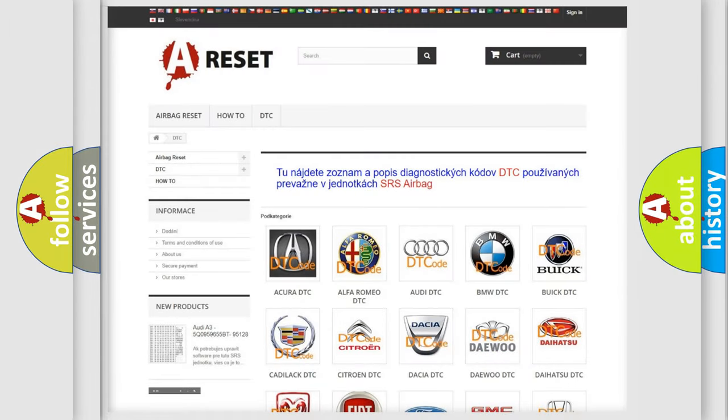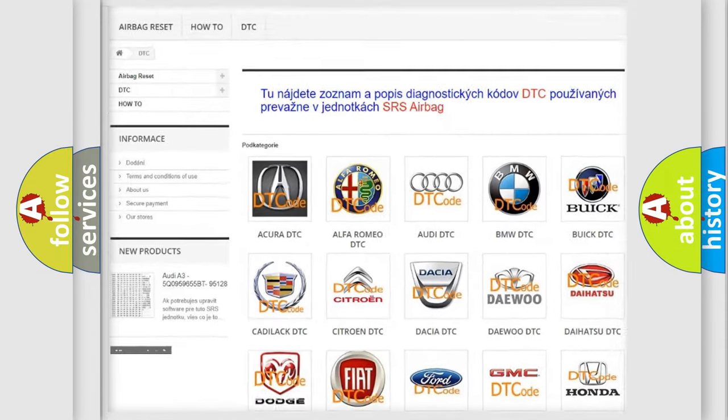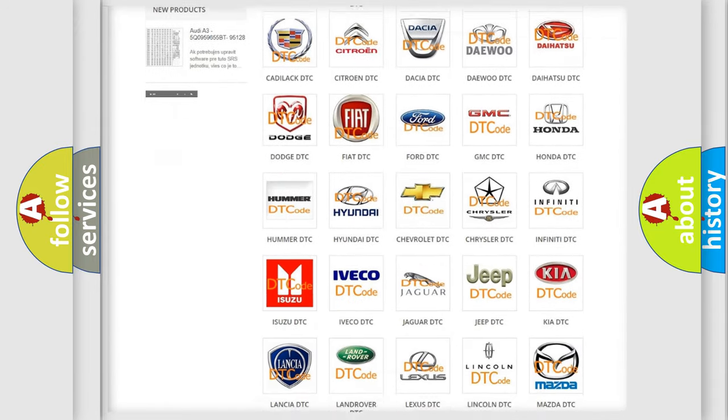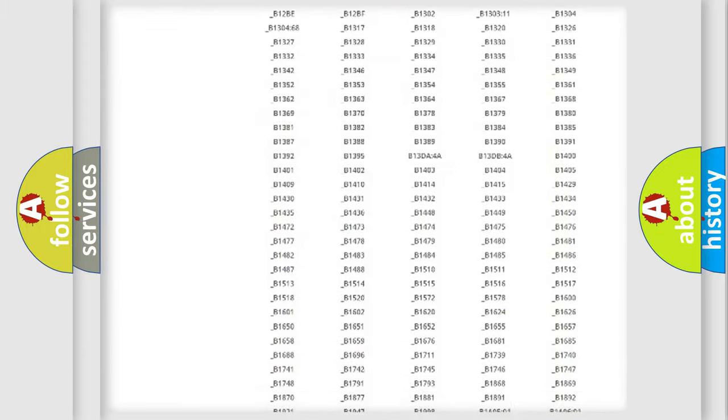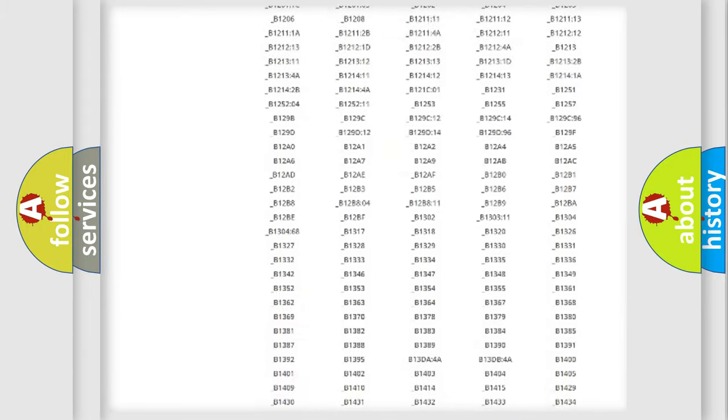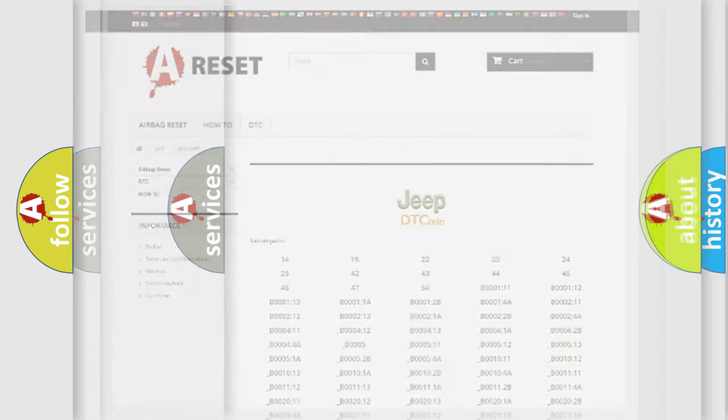Our website airbagreset.sk produces useful videos for you. You do not have to go through the OBD2 protocol anymore to know how to troubleshoot any car breakdown. You will find all the diagnostic codes that can be diagnosed in Jeep vehicles, and many other useful things.